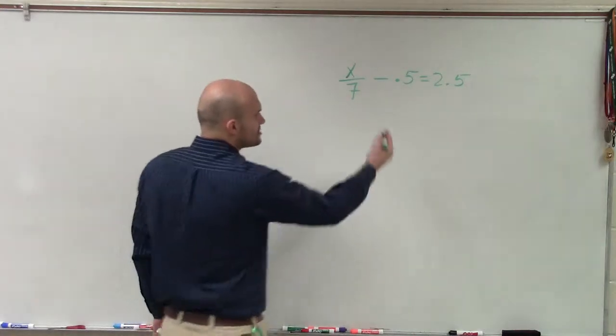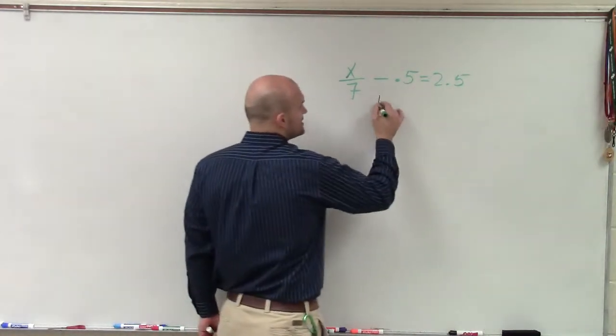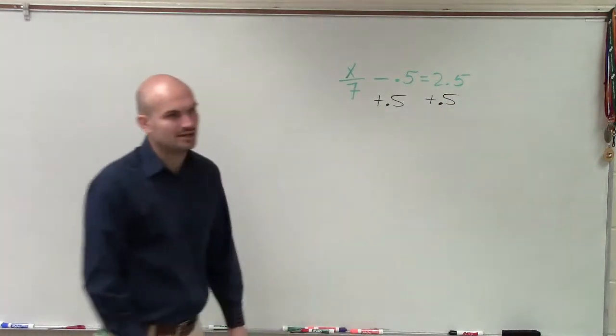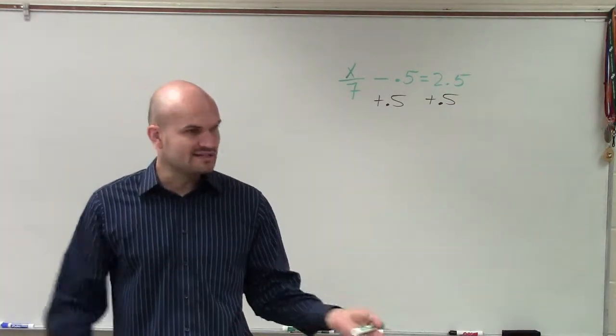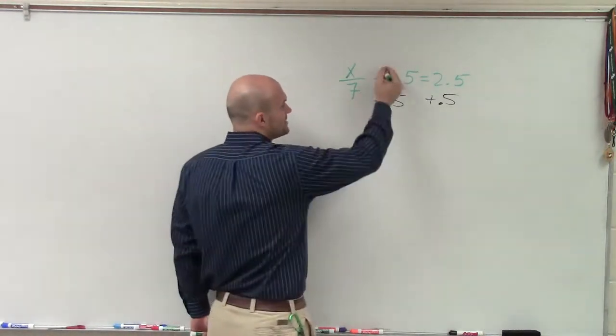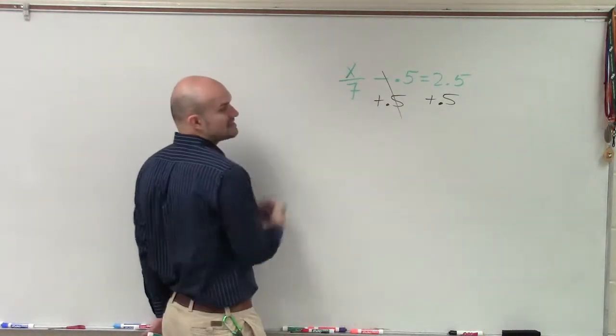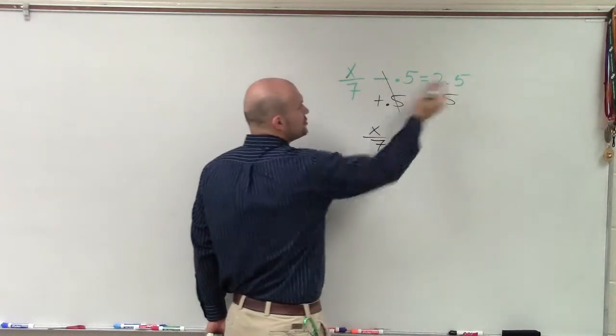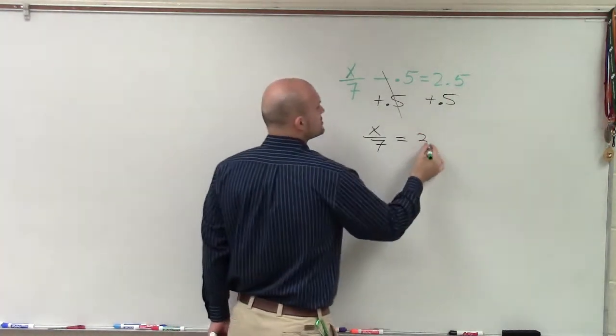So I know I'm subtracting by 0.5, so I need to add 0.5 to both sides, which we call our addition property of equality. Whatever you do on one side, you have to do on the next. And then negative 0.5 plus 0.5 is going to be 0. Zero plus x divided by 7 is x divided by 7. 2.5 plus 0.5 equals 3.